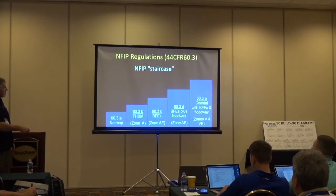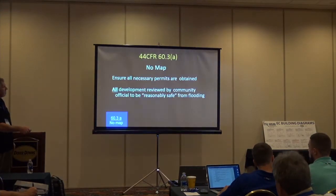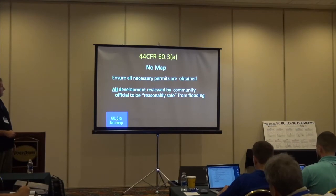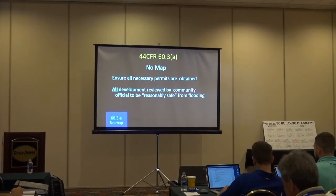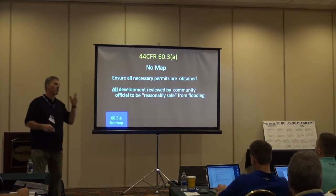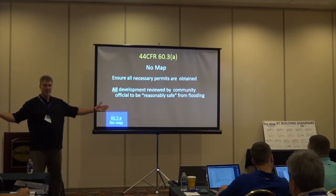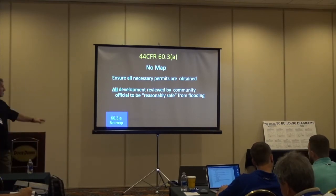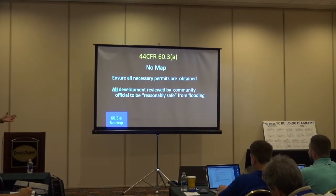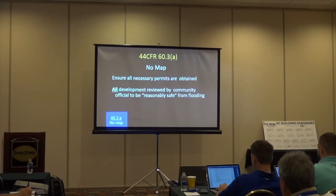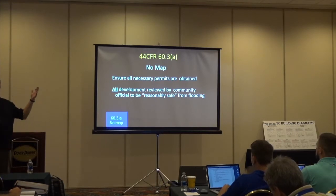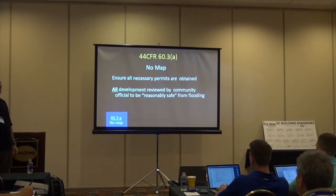Our very first step — no map. 60.3A says: I don't have a map. My development is so new, or my municipality is so new to the NFIP, we don't have a map. And there's still areas that don't have a map. So if I don't have a map, my community official — could be my building official, floodplain administrator, mayor — whoever's tasked has to deem that things are reasonably safe from flooding.